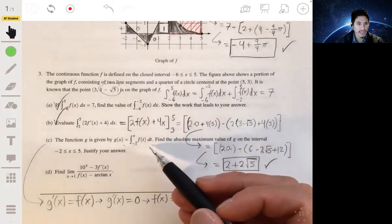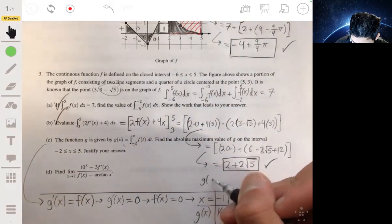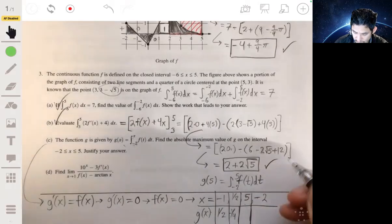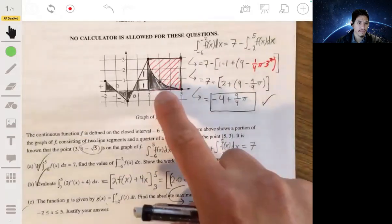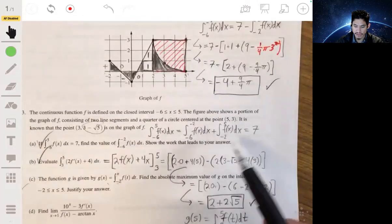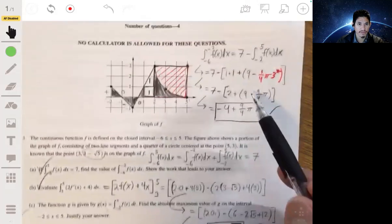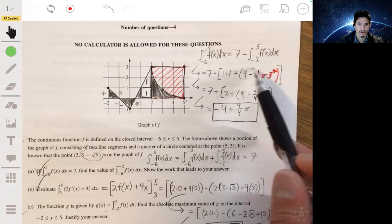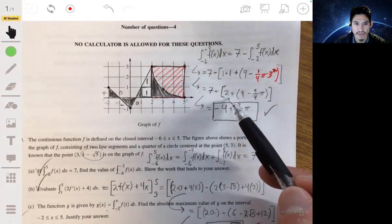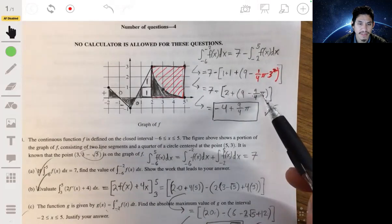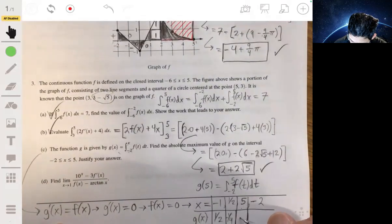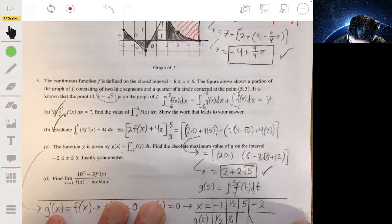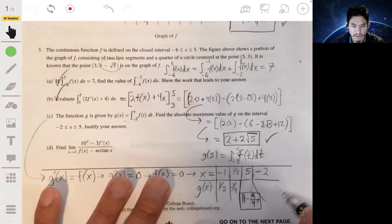And then g(5)—again, g(5) would be—let's write it out over here—g(5) is integral from negative 2 to 5 of f(t)dt. And you can just find the area from here to here. And now, if you remember, that's the value you're subtracting from 7 in part a. So over here, if you remember, from negative 2 to 5 was this whole thing. So it would be 11 minus (9/4)π.